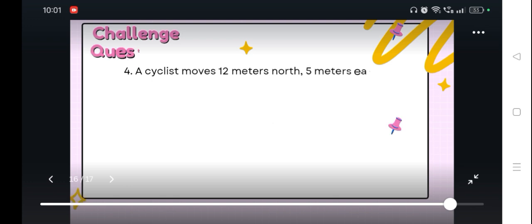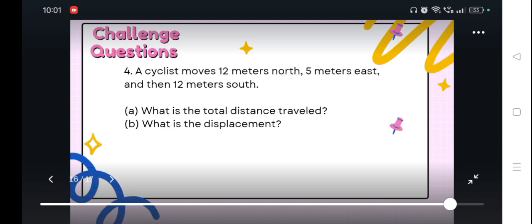And finally, a cyclist moves 12 meters north, 5 meters east, and then 12 meters south. You can draw a diagram that is implied in this problem. So 12 meters going north, next 5 meters going east, and then finally 12 meters going south.